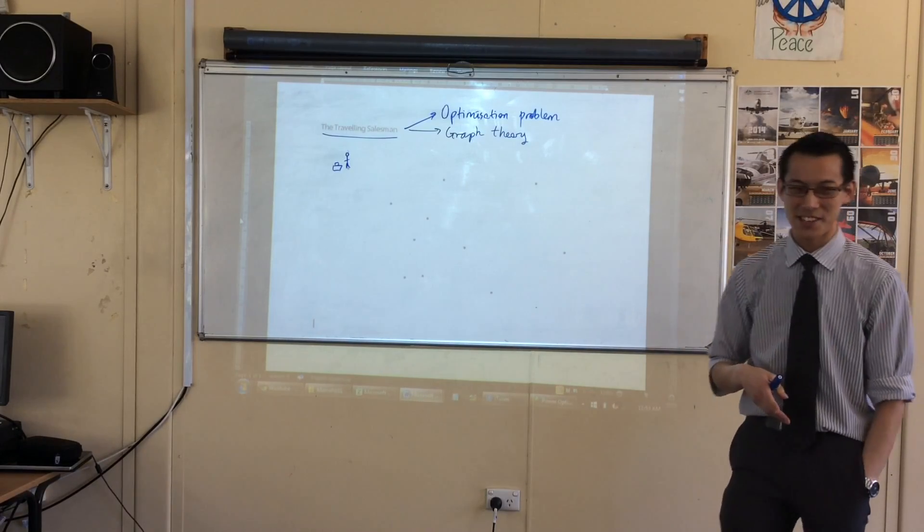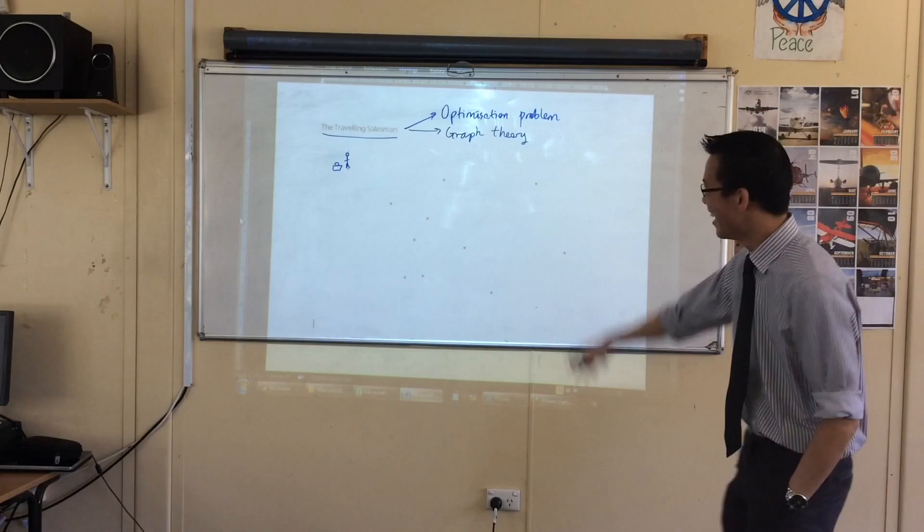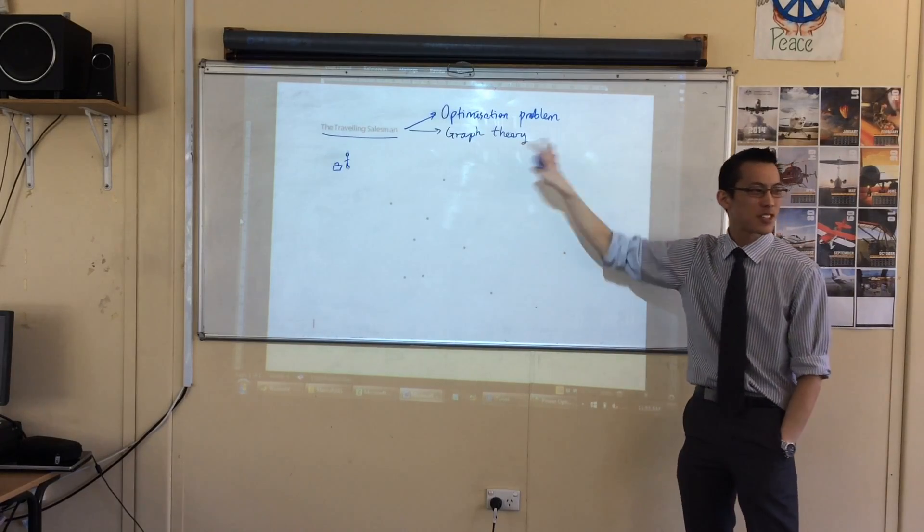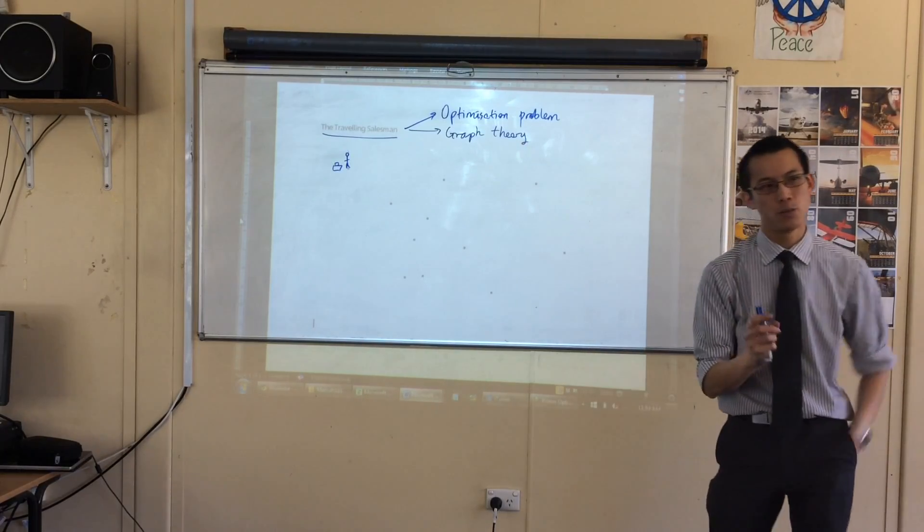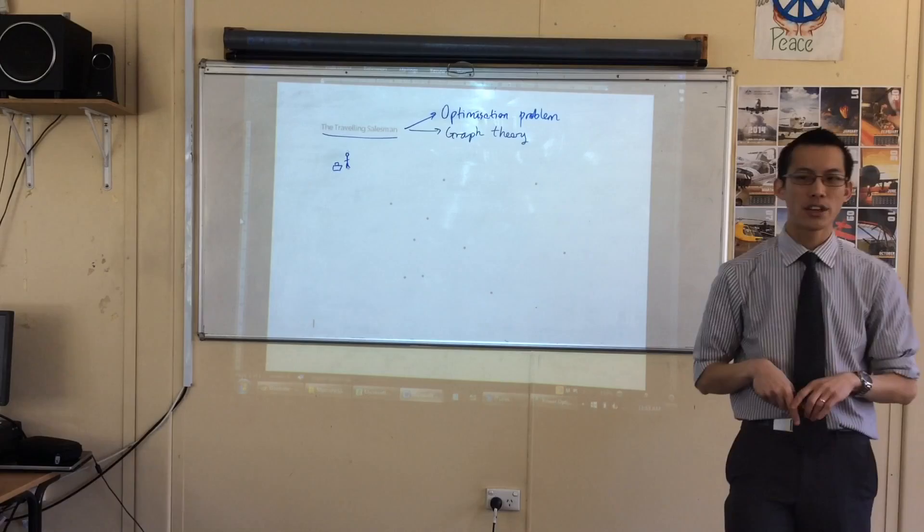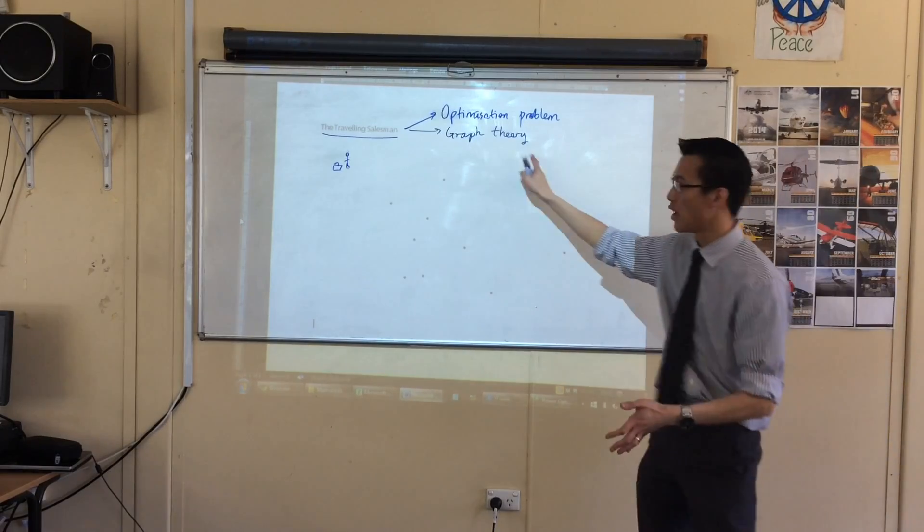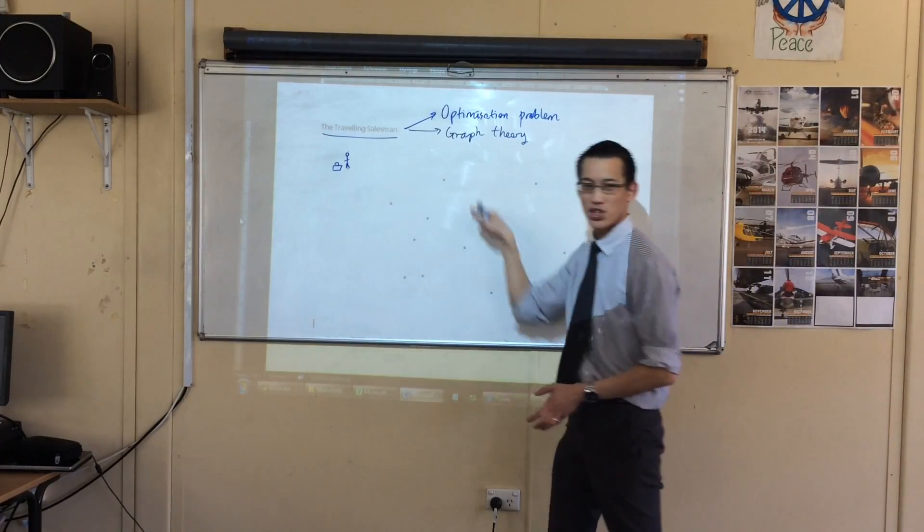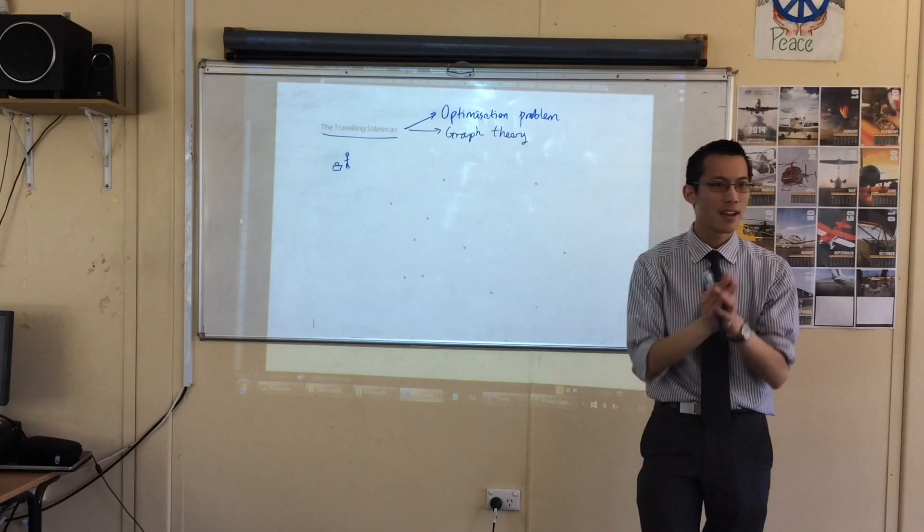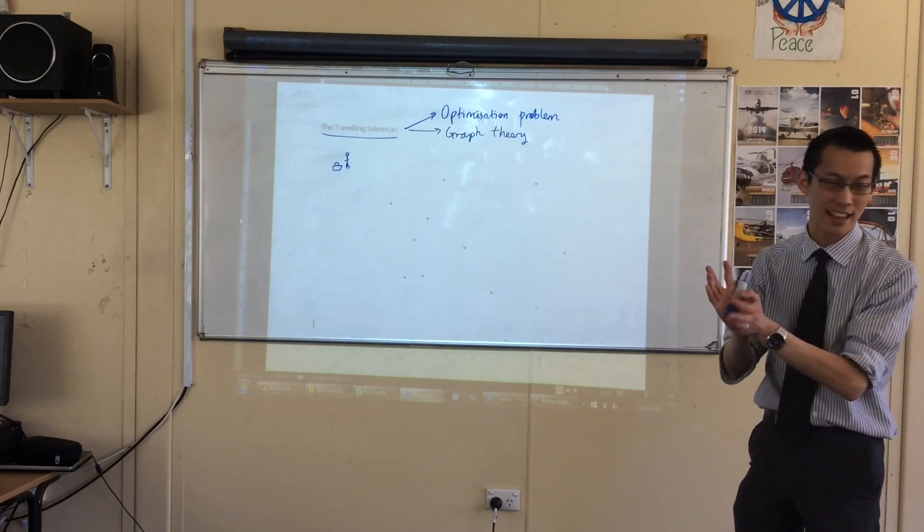This problem in other regions of the world is called the agent salesman. He wants to get to all the points as quickly as possible. You may remember we looked at other problems which have this kind of graph theory, where you need to visit certain different places. We're going to dig into that a little more deeply.